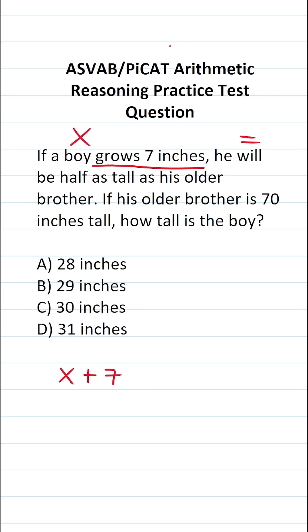He will be means equal, half as tall as his older brother. So he's going to be half the height of his older brother who is 70 inches tall. Just like that, we translated these statements into an equation that we'll now solve.